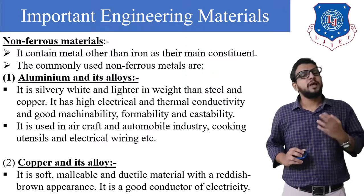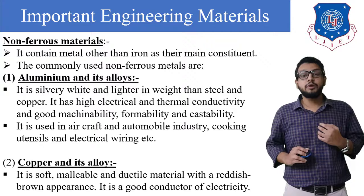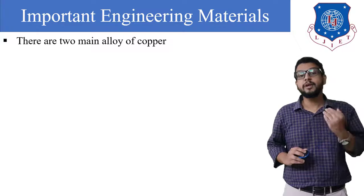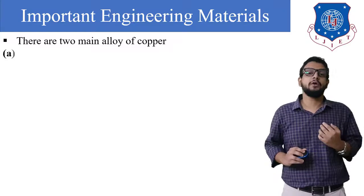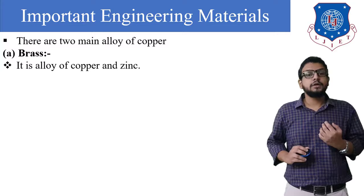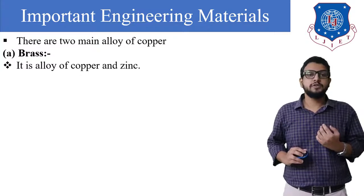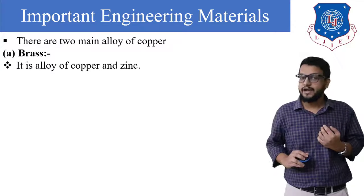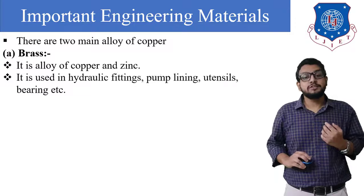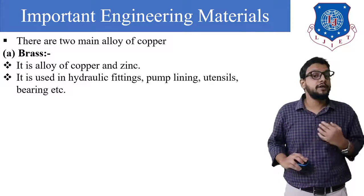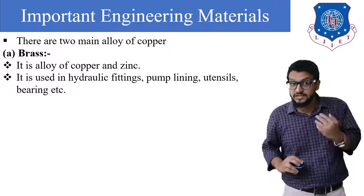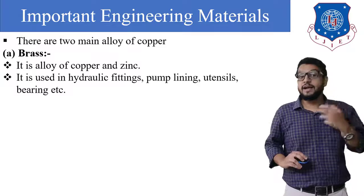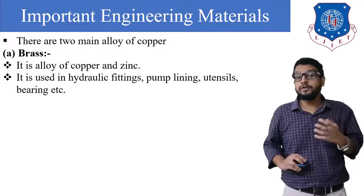Next is copper and its alloys. Copper is a soft, malleable material with a reddish-brown appearance. It is a good conductor of electricity. There are mainly two types of copper alloys. The first is brass — an alloy of copper and zinc. It is used in hydraulic fittings, pump castings, making utensils, and bearings such as ball bearings, roller bearings, and sliding contact bearings.